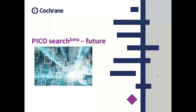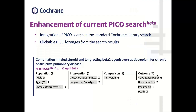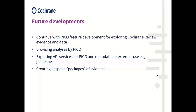Looking towards the near future with PICO search beta, we would like to integrate PICO search into the standard Cochrane Library search and also have clickable PICO lozenges from the search results — meaning you can click on each term within each PICO component and it would retrieve other reviews described as such. We would also like to continue with PICO feature development for browsing analysis by PICO, exploring API services for PICO and metadata for external use such as guidelines, and creating bespoke packages of evidence.